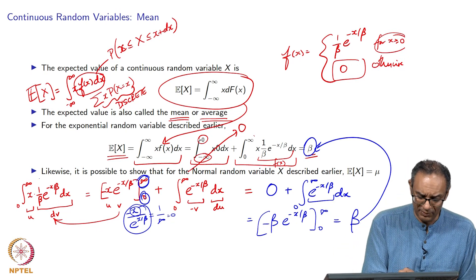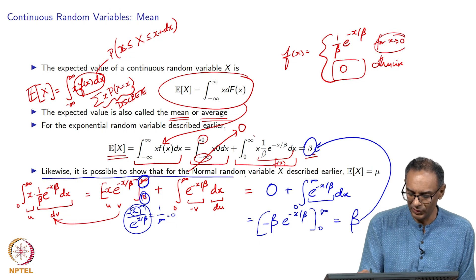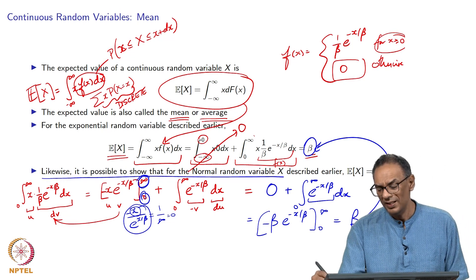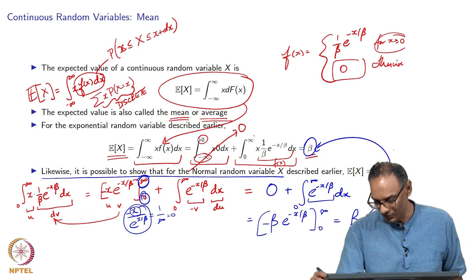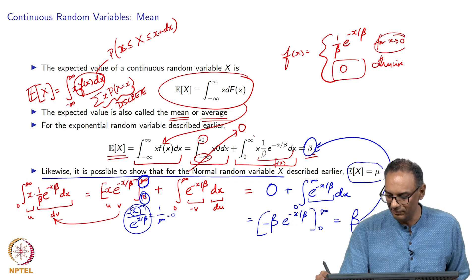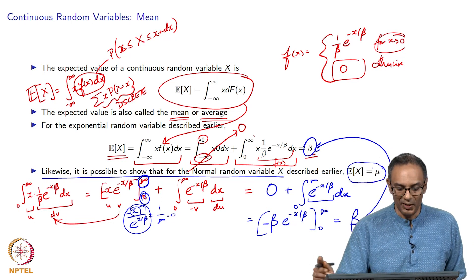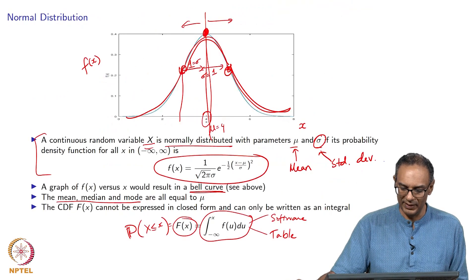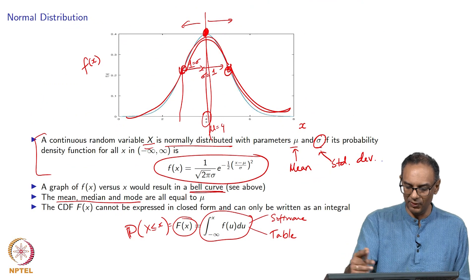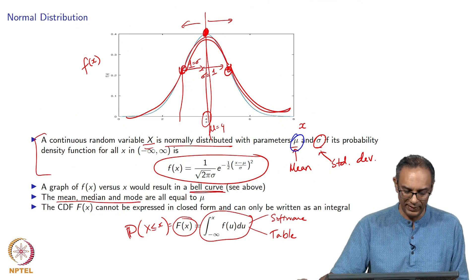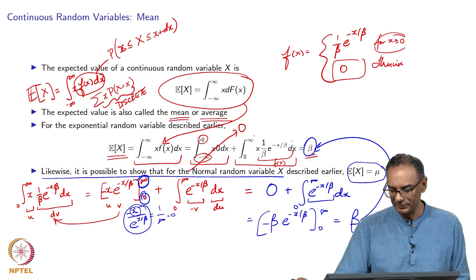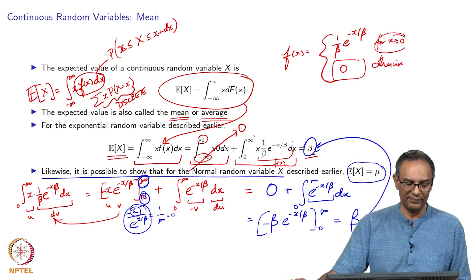In a similar fashion, but much harder, is to show that for the normal random variable, integration by substitution gives E[X] = mu. We had already seen this result: the mean, median, and mode are all equal to mu for the normal distribution.